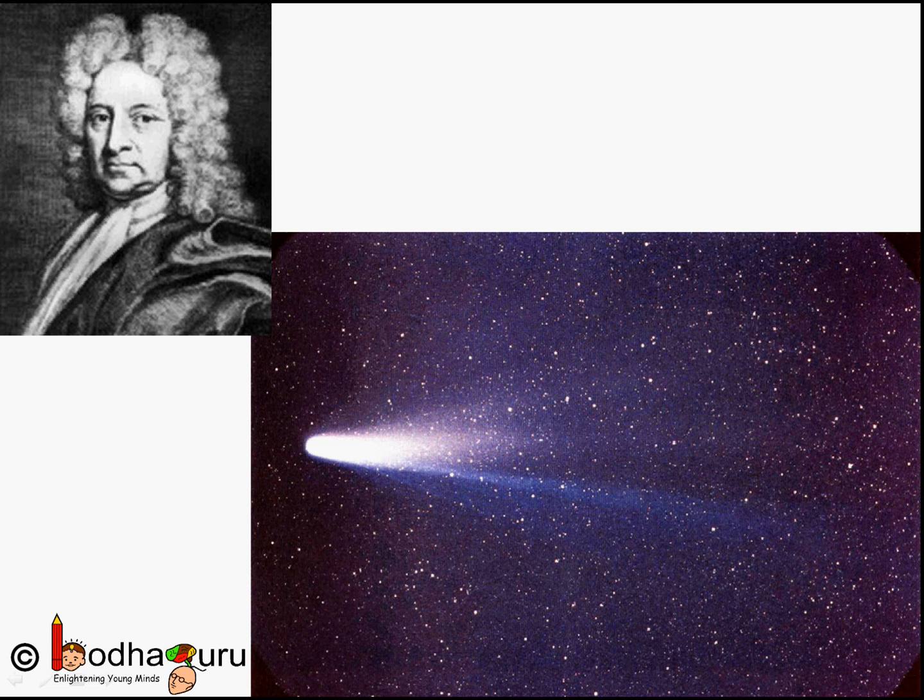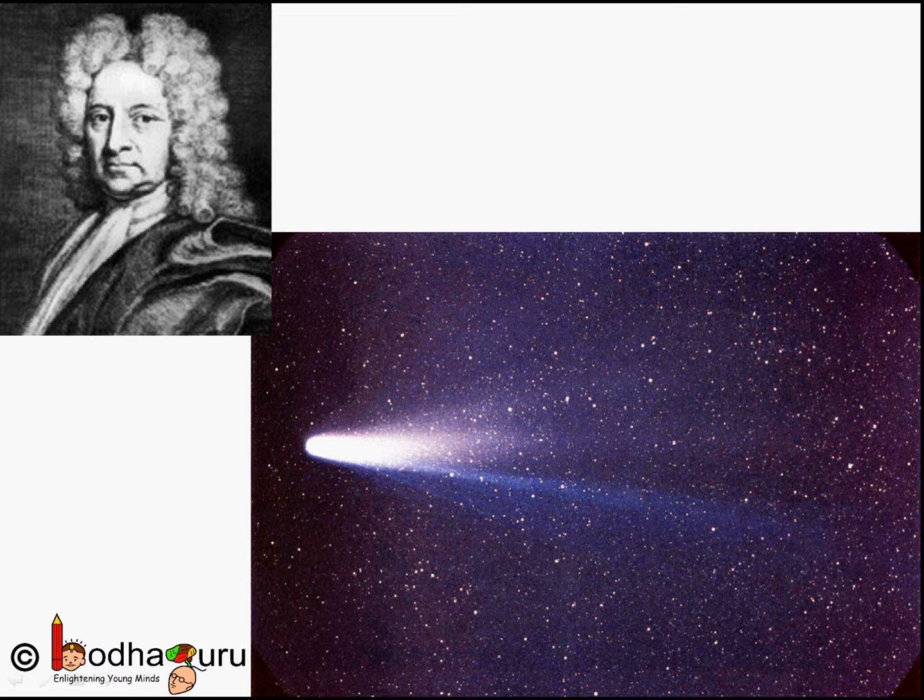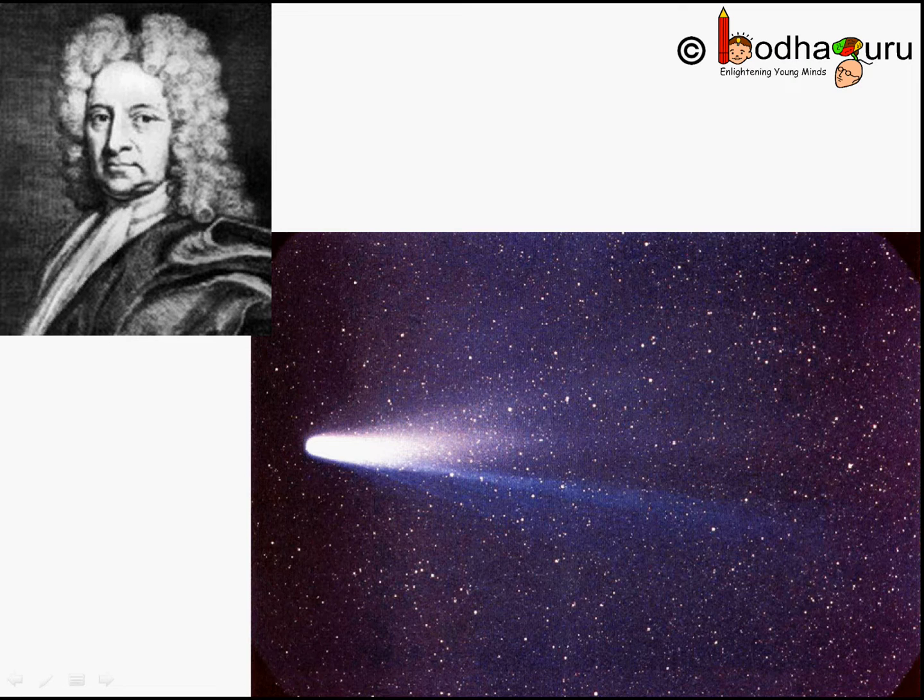In 1682, Edmund Halley saw a comet in the sky and predicted its return in 1759. And his prediction was true. That comet was later named Halley's Comet in his honor. That kind of calculation requires good knowledge of polynomial division.